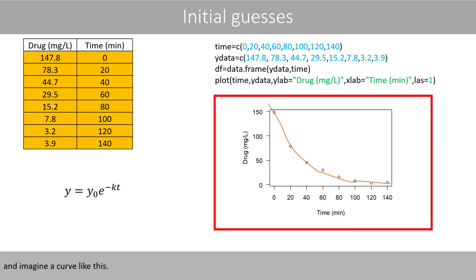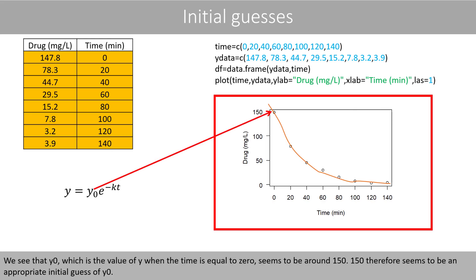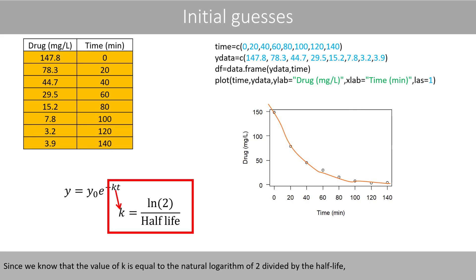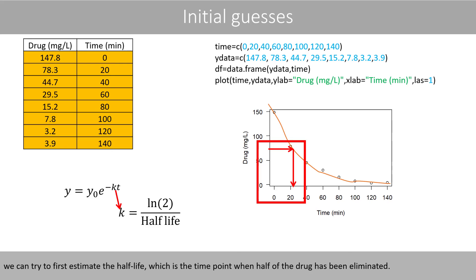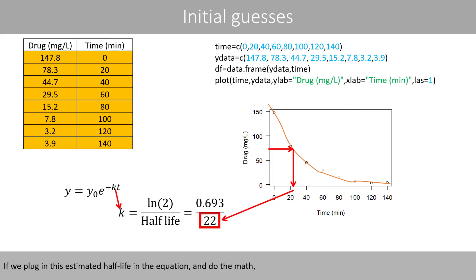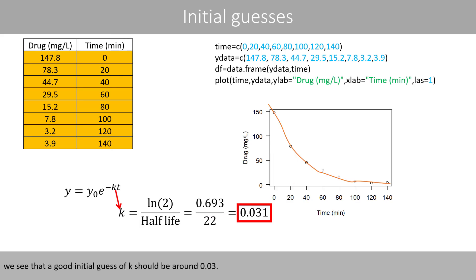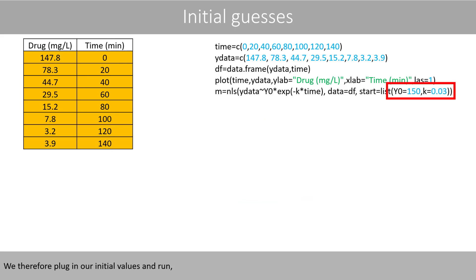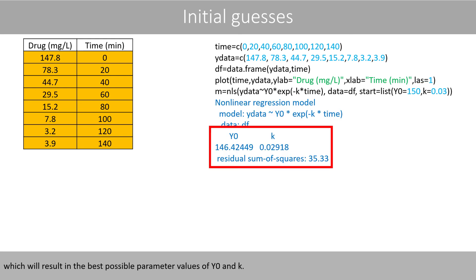To come up with good initial guesses, let's first plot the data and imagine a curve. We see that y0, which is the value of y when time equals 0, seems to be around 150, so 150 is an appropriate initial guess. Since the value of k equals the natural log of 2 divided by the half-life, we can estimate the half-life — the time point when half of the drug has been eliminated — and plug it into the equation. This gives a good initial guess of k around 0.03. We then plug in our initial values and run the model, resulting in the best possible parameter values of y0 and k.